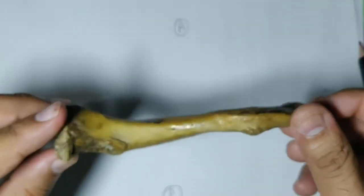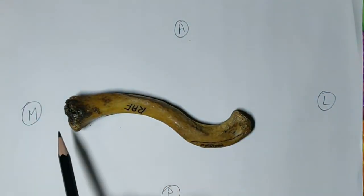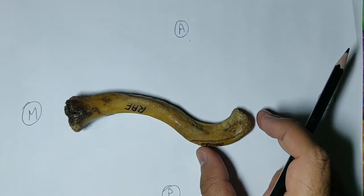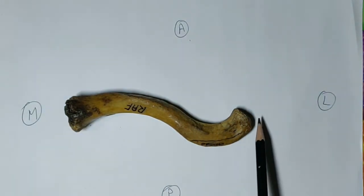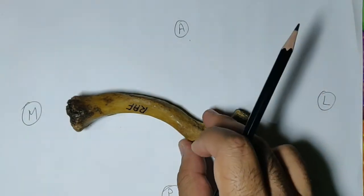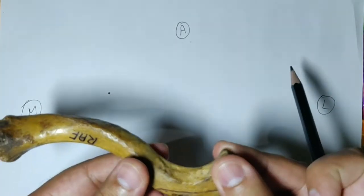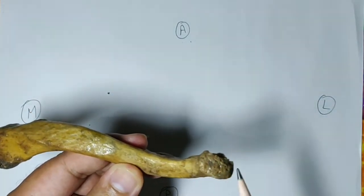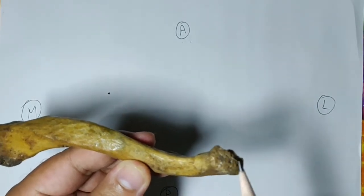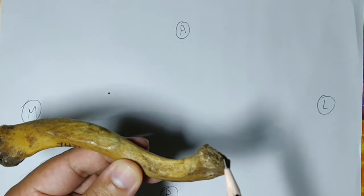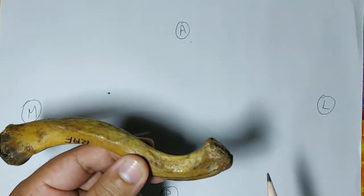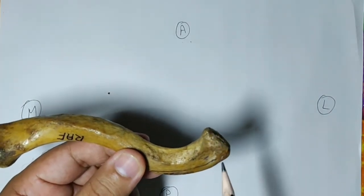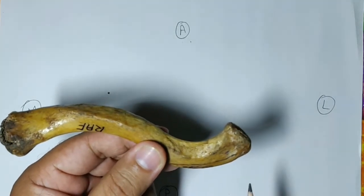Now we will see the ends. The lateral end is flat above to downward and has an articular facet. It articulates with the acromion process of the scapula to form the acromioclavicular joint. So, the lateral end is also known as the acromial end.